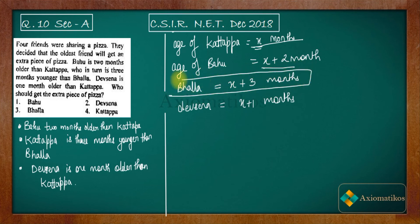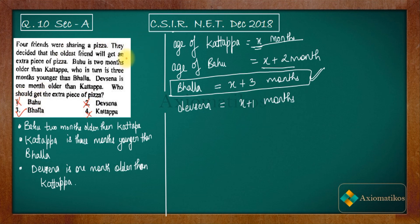So the age of Bhalla is the biggest. The question asked that the oldest friend will get an extra piece of pizza. Bhalla is the oldest, so the answer for the problem will be option 3, since Bhalla is the oldest one. All other remaining options are false. If you have any doubt regarding this problem, ask in the comment section. You can also join our WhatsApp and Telegram groups — links are given in the description.